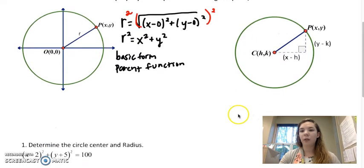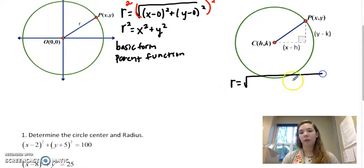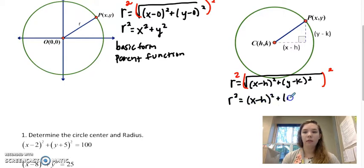So over here on the right is what it would look like if it doesn't start at 0, 0. h, k could stand for any center of your circle, so it could stand for 2, 2 or negative 1, 3, and wherever the center is. So if I set this up the same way where I use distance formula, I'd have x minus h squared plus y minus k squared, and when I square both sides here, you have r squared equals x minus h squared plus y minus k squared.